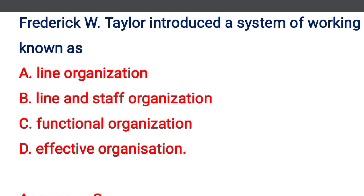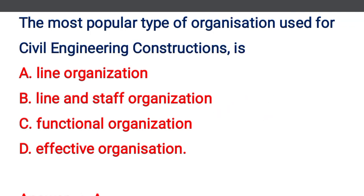Next question: Frederick W. Taylor introduced a system of working known as — option A: line organization, option B: line and staff organization, option C: functional organization, option D: effective organization. The correct answer is option C: functional organization.